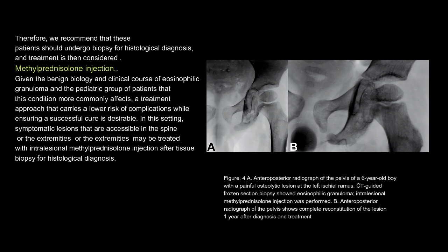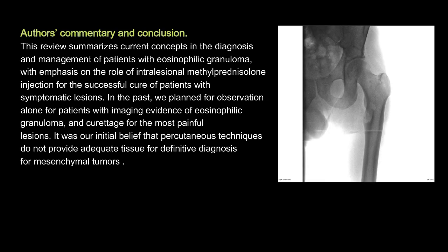Symptomatic lesions that are accessible in the spine or the extremities may be treated with intralesional methylprednisolone injection after tissue biopsy for histological diagnosis. Figure 4a: anteroposterior radiograph of the pelvis of a six-year-old boy with a painful osteolytic lesion at the left ischial ramus. CT-guided frozen section biopsy showed eosinophilic granuloma; intralesional methylprednisolone injection was performed. B: anteroposterior radiograph of the pelvis shows complete reconstitution of the lesion one year after diagnosis and treatment.